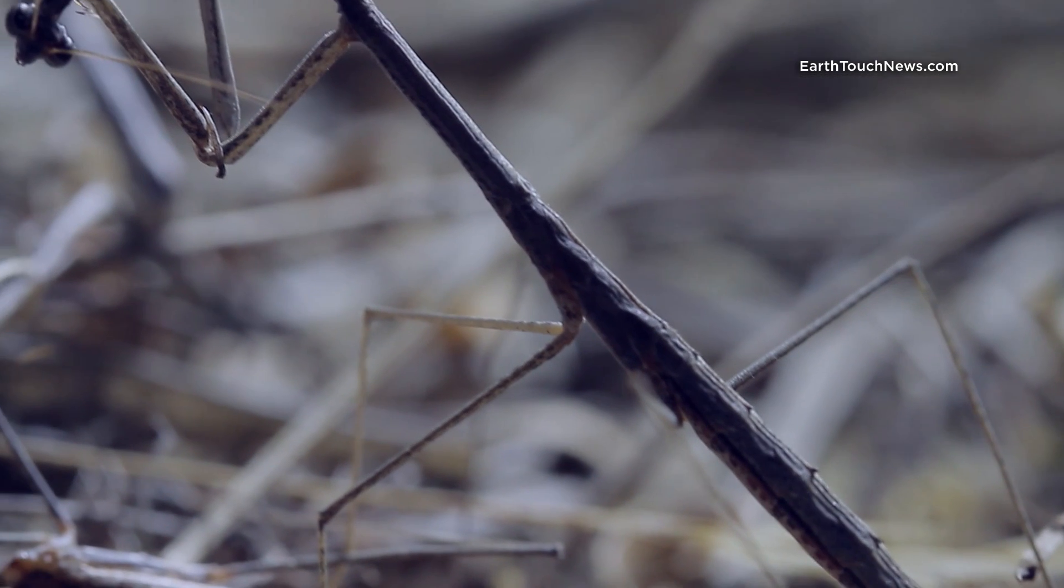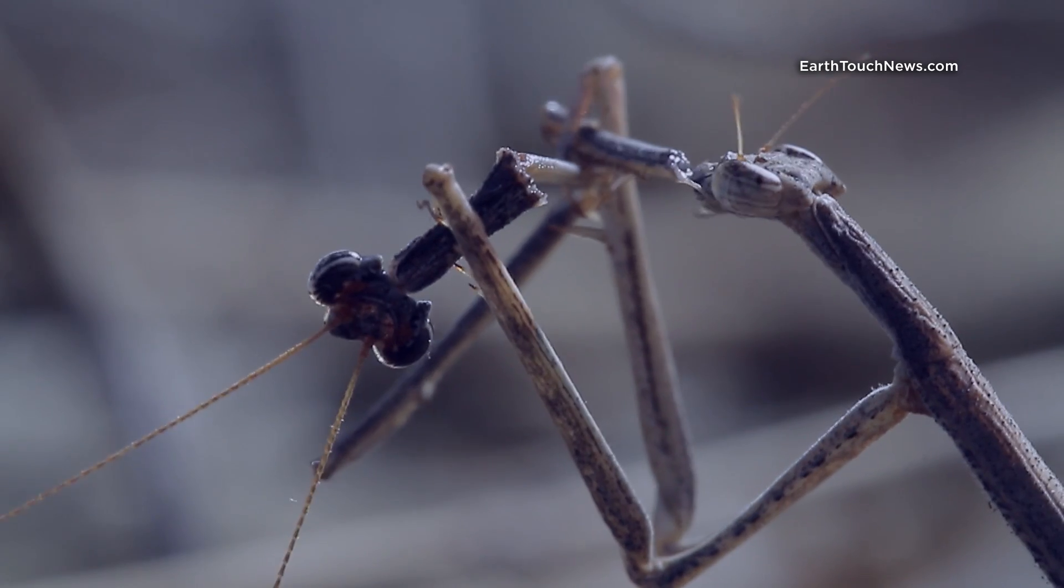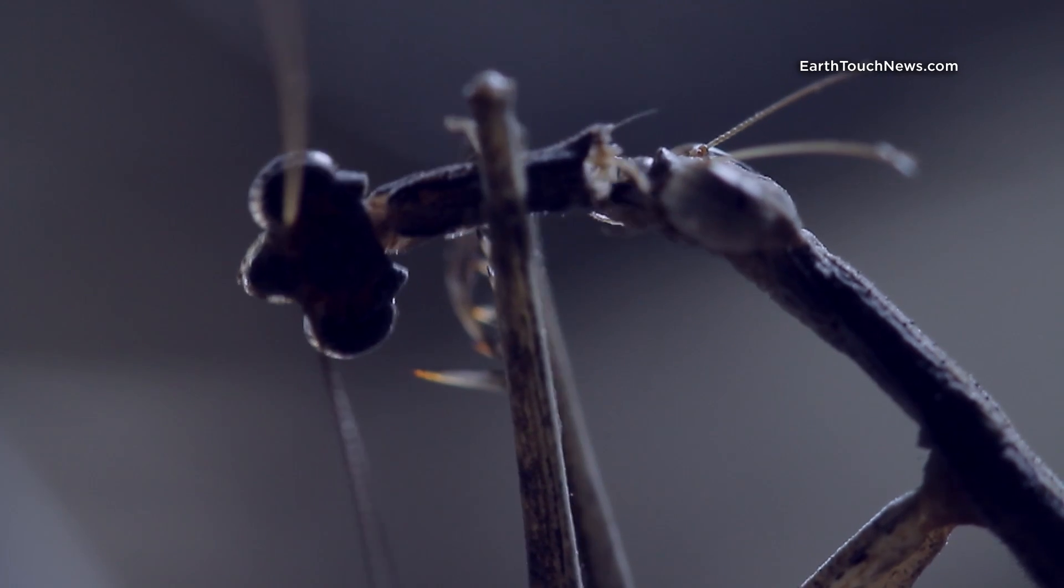Some female mantids don't ever grow out of their cannibalistic ways, like this adult who's enjoying a meal of her decapitated mate's head.